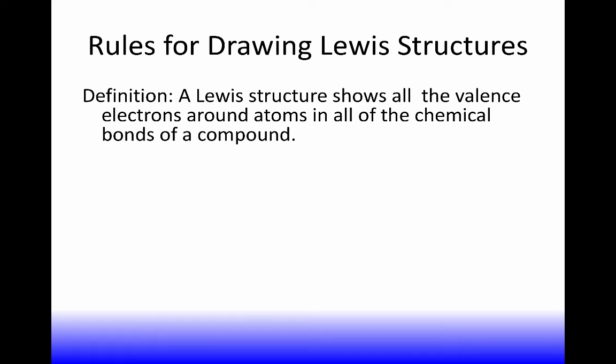Alright, now, Lewis structure shows all the valence electrons around atoms in all the chemical bonds of a compound, and also shows all the lone pairs. So the first thing we do to draw a Lewis structure is we add up all the valence electrons. Remember, they're the S and P electrons in the highest energy level which the atom is found.